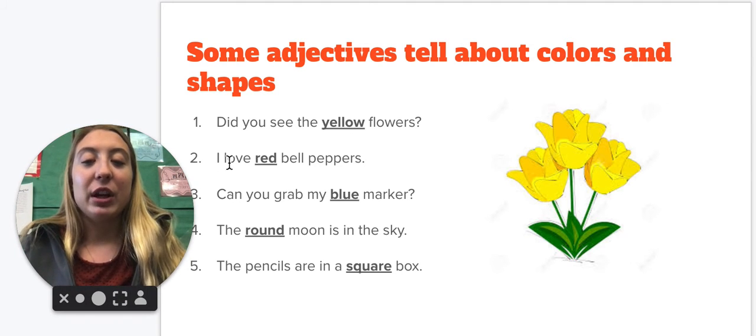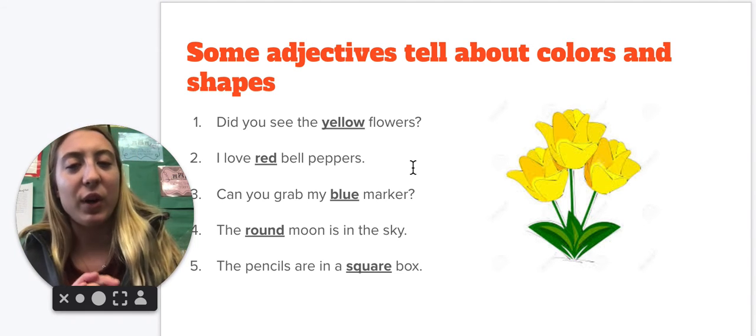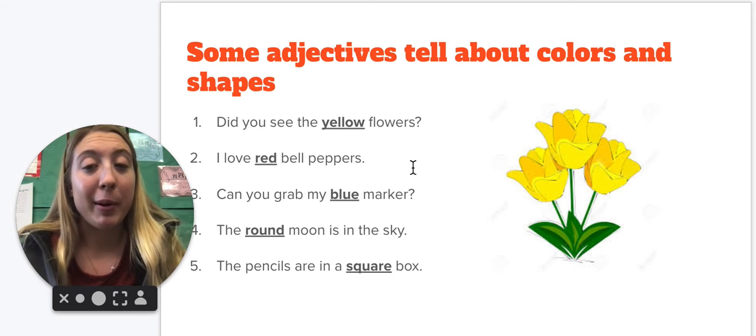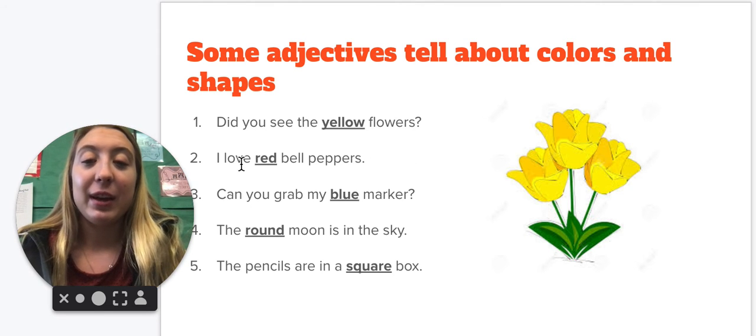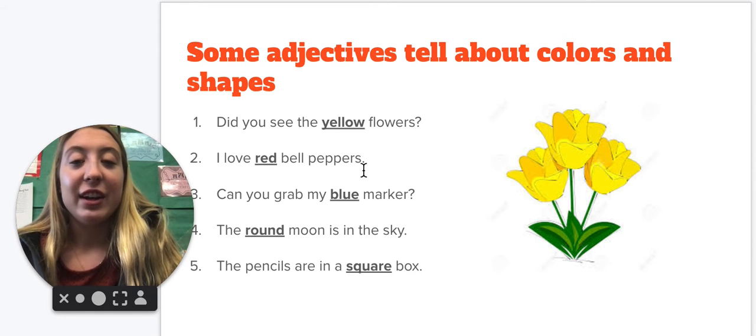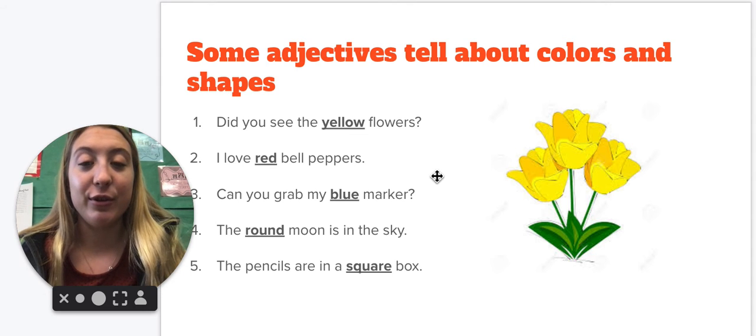So now if I'm reading, I love red bell peppers. What could be the adjective in this sentence? Well, what kind of bell peppers do you love? And we have red, which is giving us a color. And bell peppers are a noun because it is a food. It is a thing.